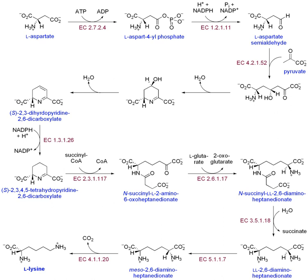Pyrroline-5-carboxylate is further reduced by pyrroline-5-carboxylate reductase to yield proline. In the first step of arginine biosynthesis in bacteria, glutamate is acetylated by transferring an acetyl group from acetyl-CoA at the N-alpha position, preventing spontaneous cyclization. N-acetylglutamate synthase catalyzes this acetylation. Subsequent steps are catalyzed by N-acetylglutamate kinase, N-acetyl-gamma-glutamylphosphate reductase, and acetylornithine aminotransferase, yielding N-acetyl-L-ornithine. Acetylornithinase or ornithine acetyltransferase removes the acetyl group to yield ornithine, and then the enzymes citrulline and argininosuccinate convert ornithine to arginine.